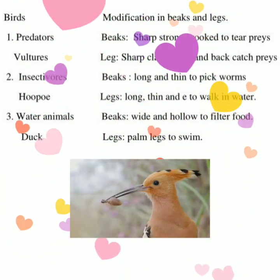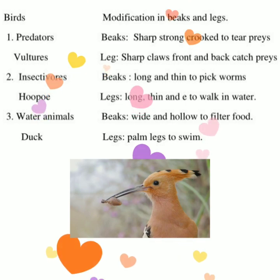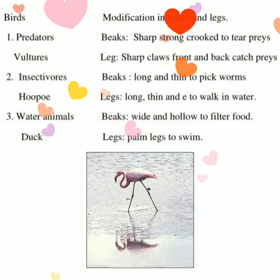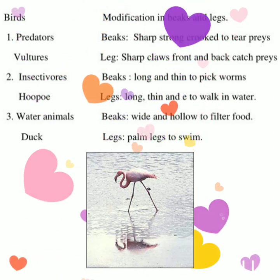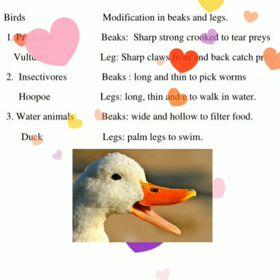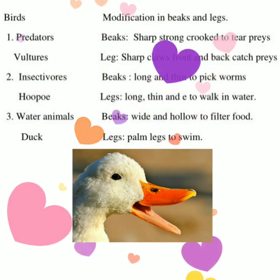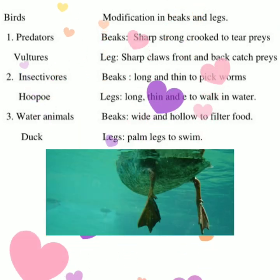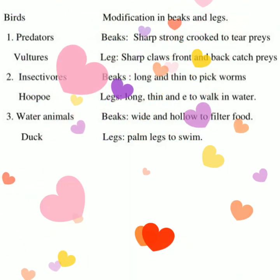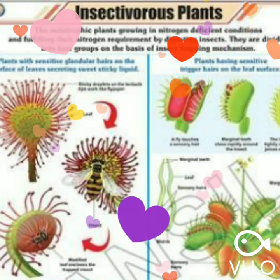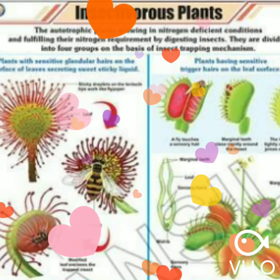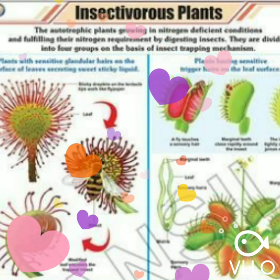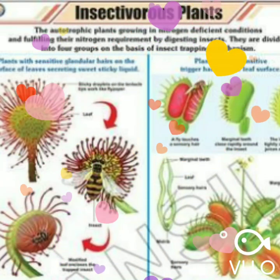Insectivorous birds like the hoopoe have beaks that are long and thin to pick worms, and legs that are long and thin for walking. Water animals like the duck have wide, serrated beaks to filter food from water, and webbed feet to swim.